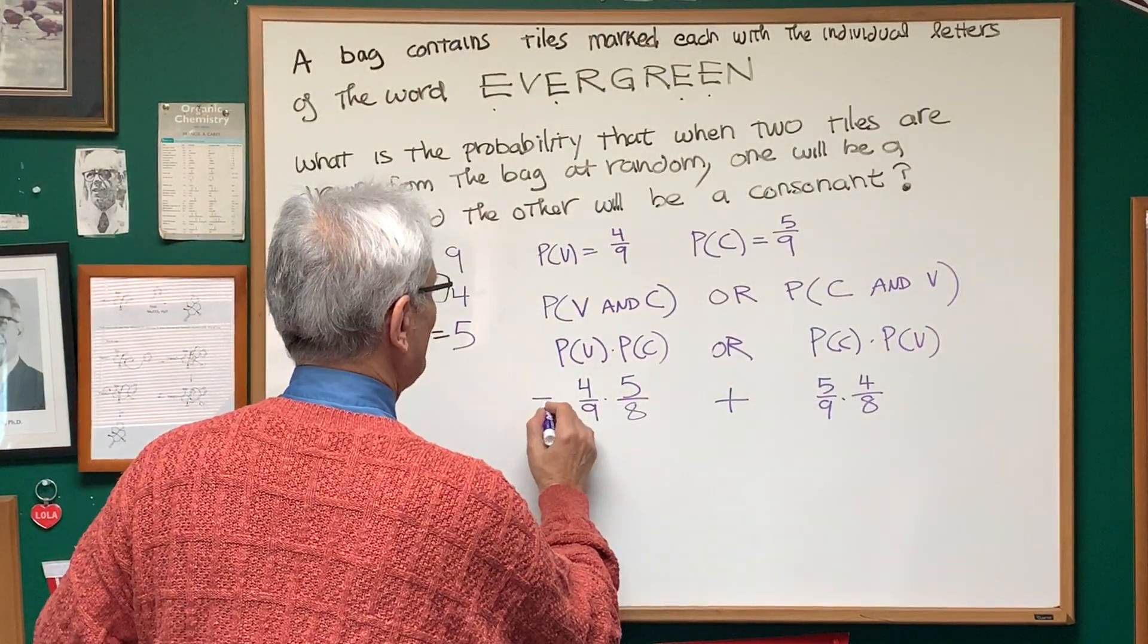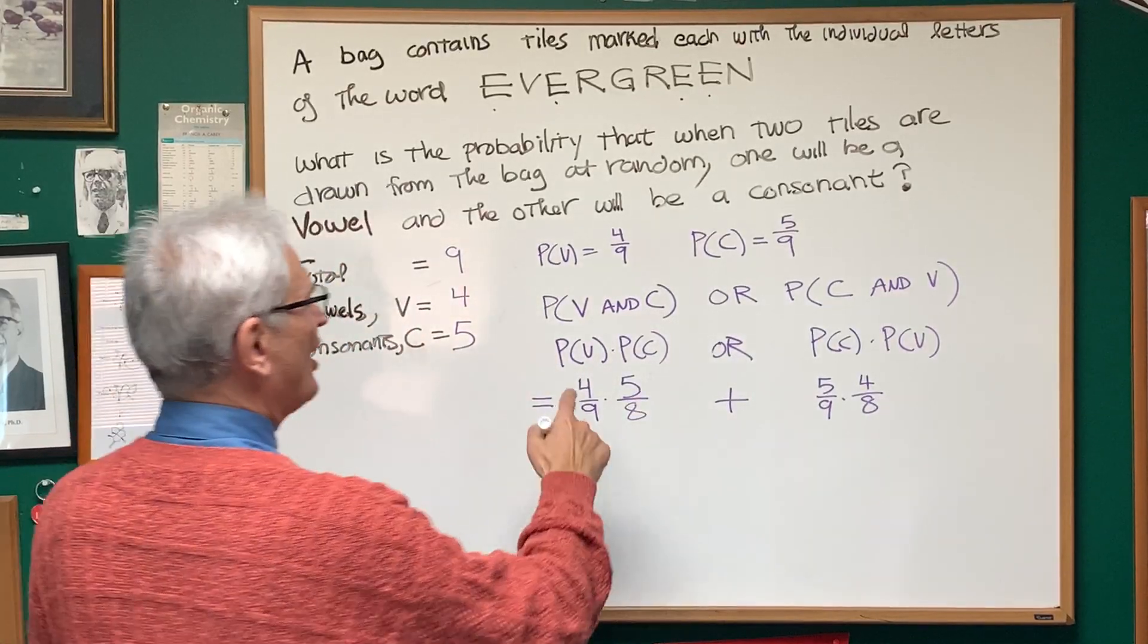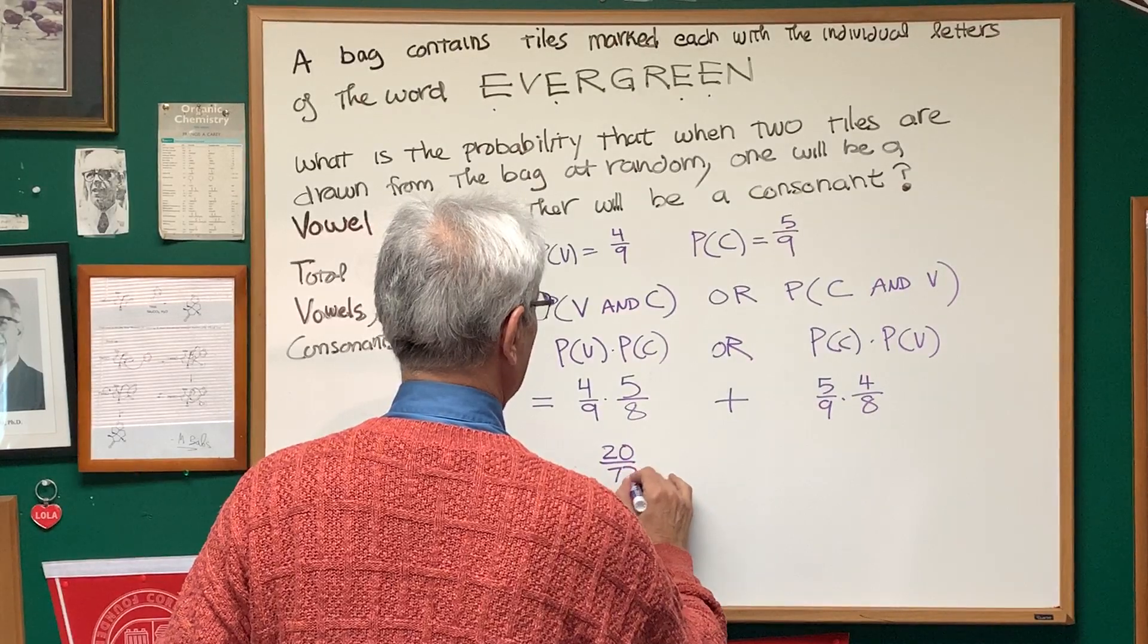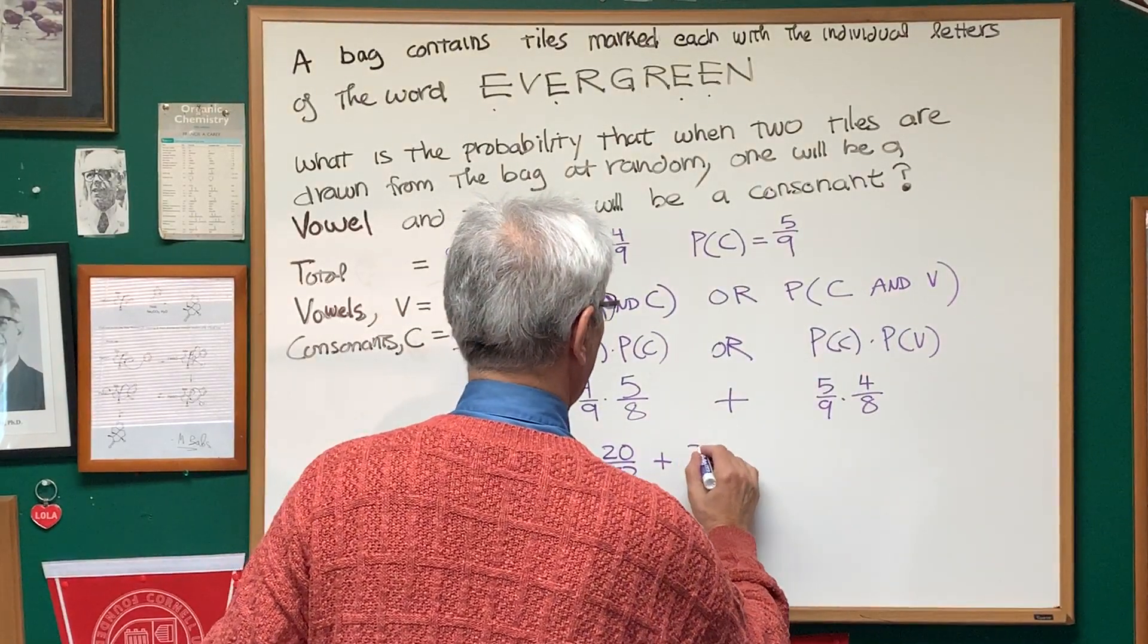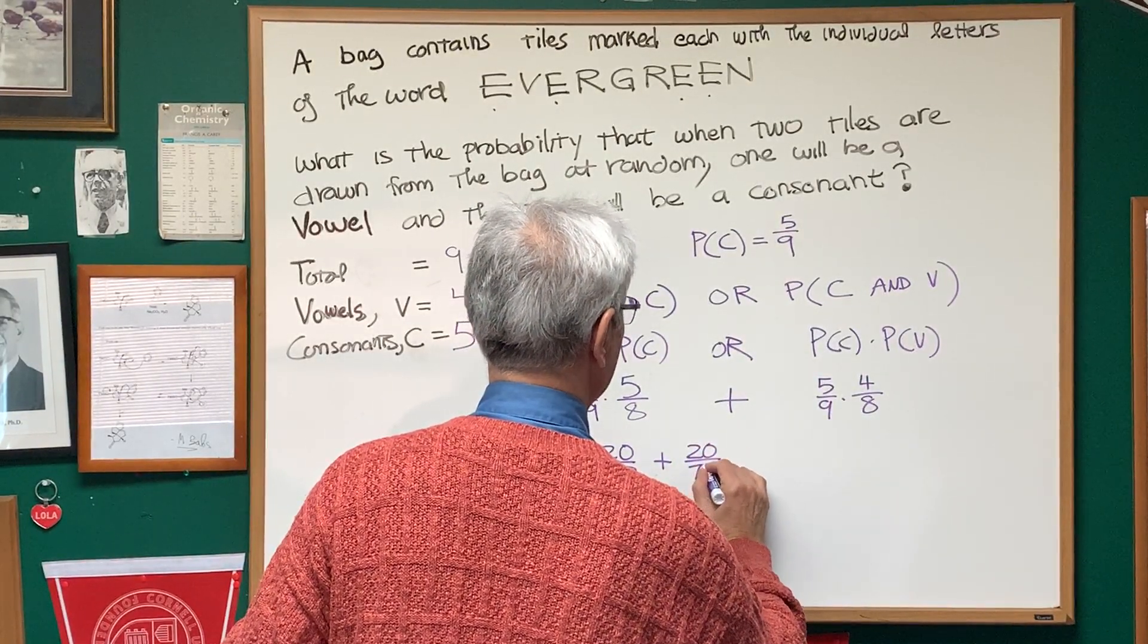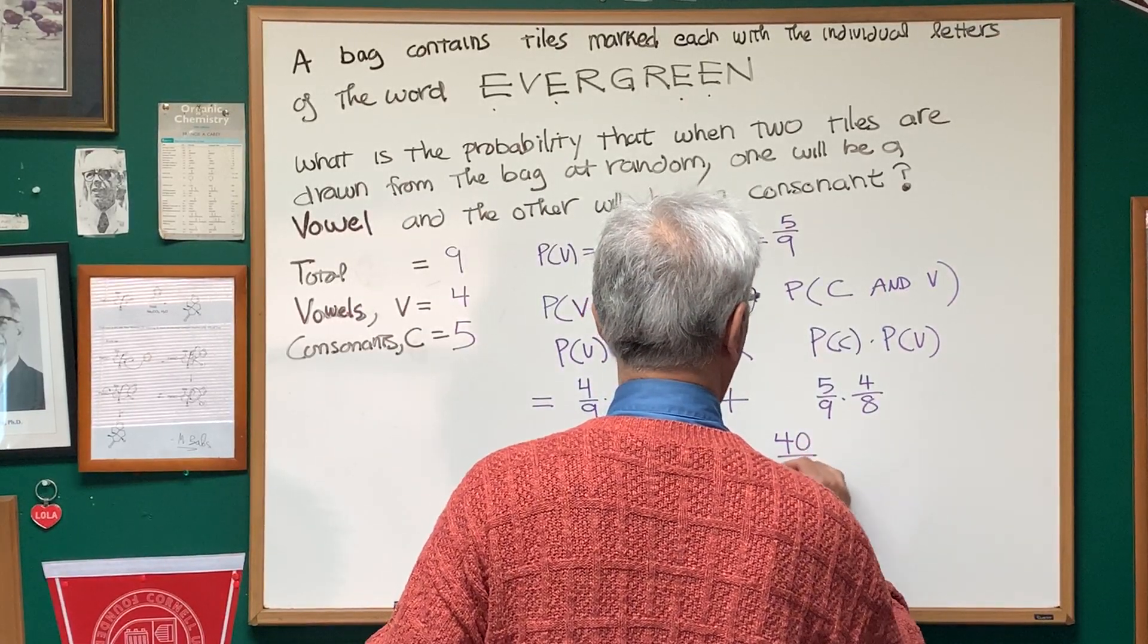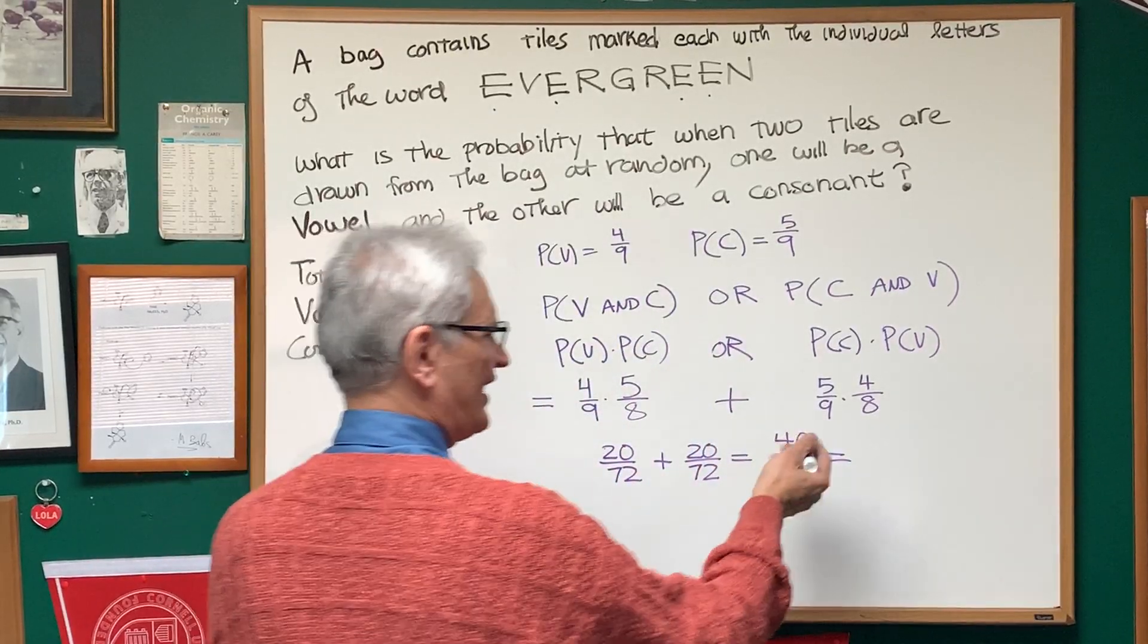So here is our answer. Let's figure it out. Four times five is 20. Nine times eight is 72. Five times four is 20. Nine times eight is 72. So what's our solution here? It's going to be 40 over 72.